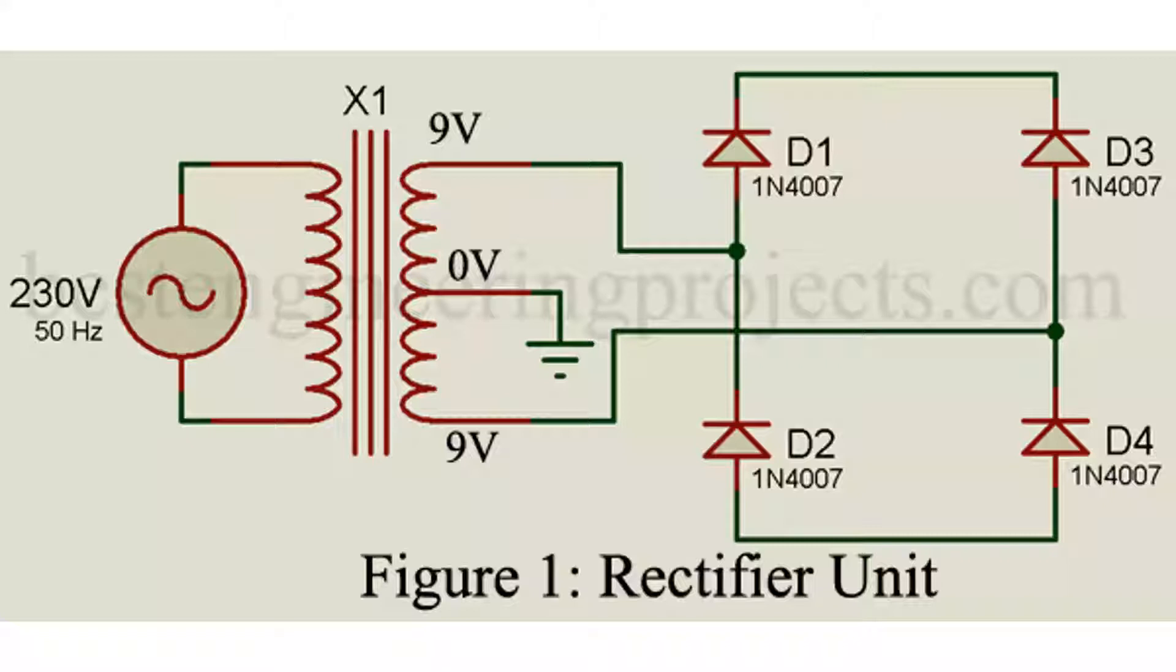Primary winding of the transformer is connected to 230 volt AC mains, where secondary winding is connected to rectifier input, that is between diode D1 and D2 and D3 and D4 as shown in the circuit diagram. The 0 volt terminal is for ground.